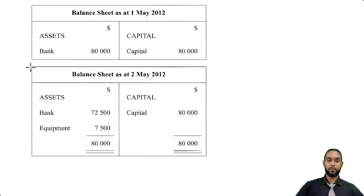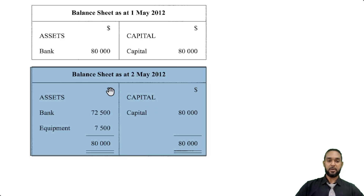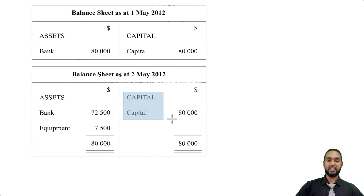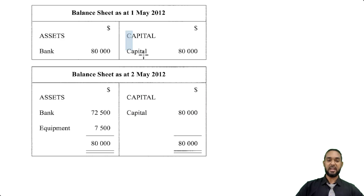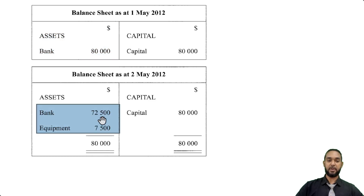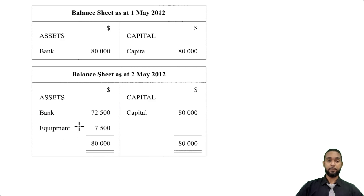The second balance sheet shows us what happened on the 2nd of May — the aftermath, I should say. We are seeing bank $72,500 and equipment $7,500. On the right hand side, the capital figure is still $80,000. So relative to the balance sheet above, the capital figure on the right hand side is unchanged. But the left hand side — the asset side — initially we just had bank of $80,000, but now we have bank of $72,500 and equipment of $7,500. So it looks like we spent some money out of the bank to buy some equipment.